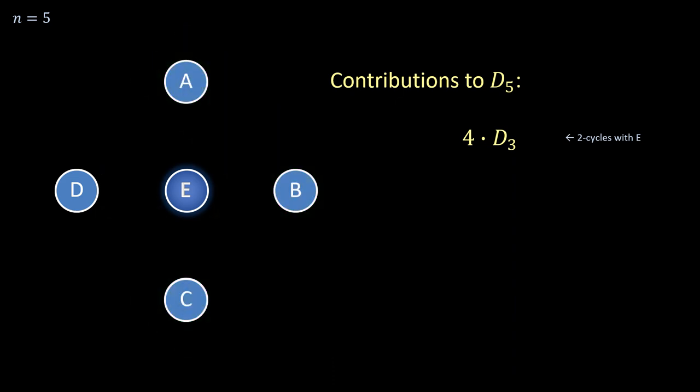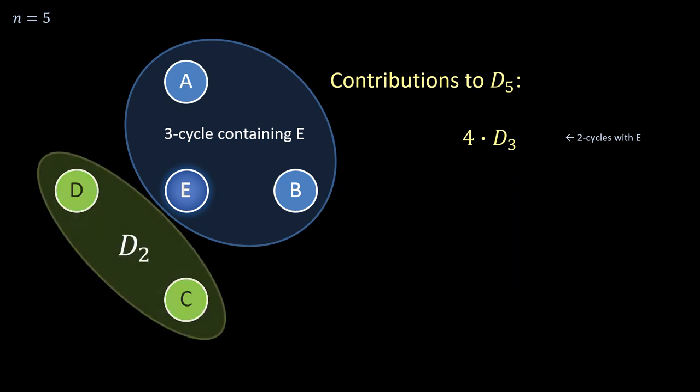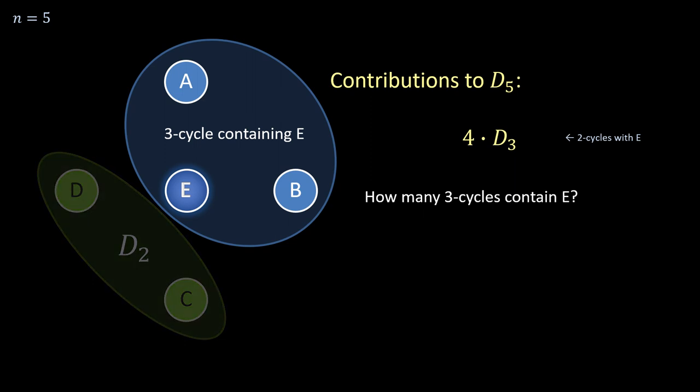The next thing to consider would be three cycles with the new element. The two excluded elements then form a subset with D_2 possible derangements. How many of these three cycles are there?